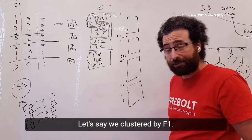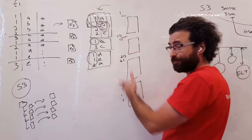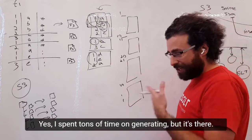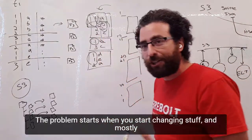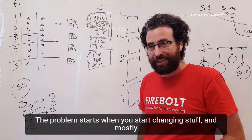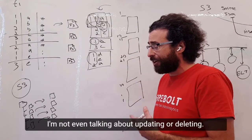Let's say we clustered by f1. Okay, nice, perfect. I spent tons of time on generating, but it's there. The problem starts when you start changing stuff, and mostly when changing I'm not even talking about updating or deleting.